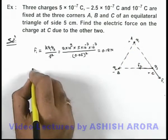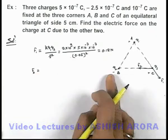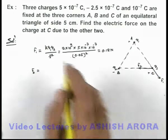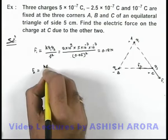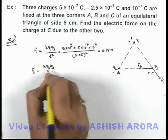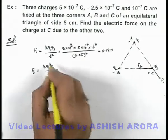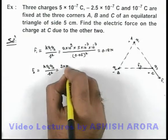Similarly, we can find out the force F₂, which is exerted by B on C. That is an attractive force, and its value can be given as k·q₂·q₃/r².